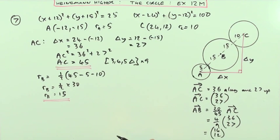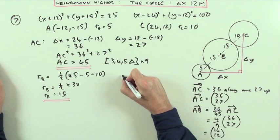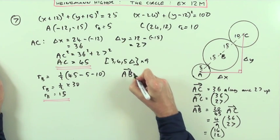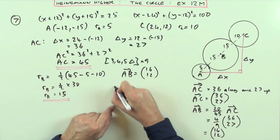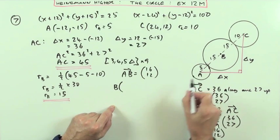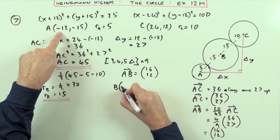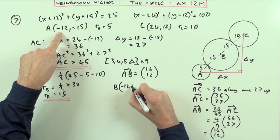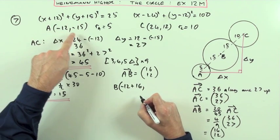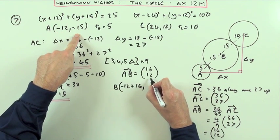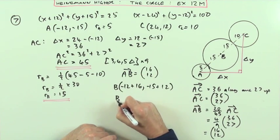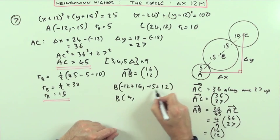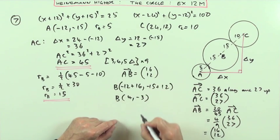Now I can find the coordinates of B. Point A was at (-12, -15). Adding the displacement: x-coordinate is -12 + 16 = 4, and y-coordinate is -15 + 12 = -3. So the center of circle B is at (4, -3).